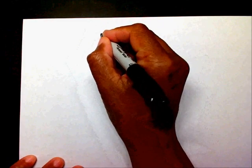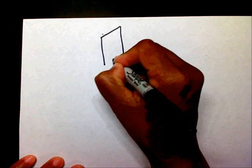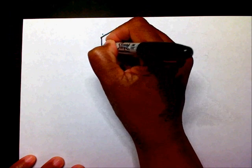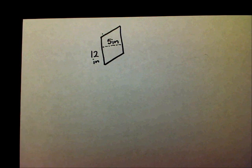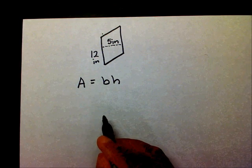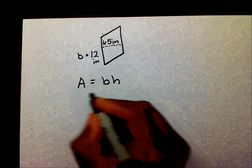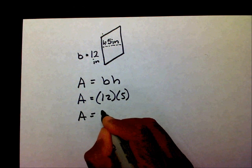Let me give you one to work. Please find the area of this parallelogram and pause the video while you're doing that. I hope you wrote your formula down first: A equals B times H. What is our base? Our base is going to be 12 and our height is going to be 5. So A equals 12 times 5. A equals 12 times 5, which is 60 inches squared.